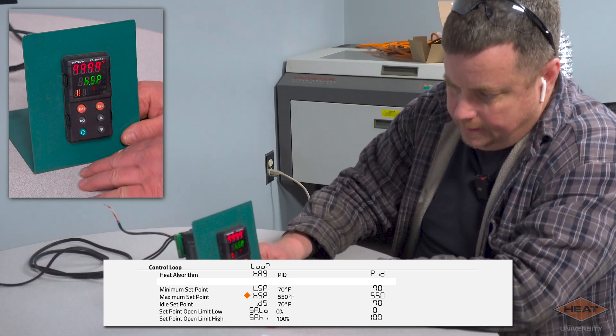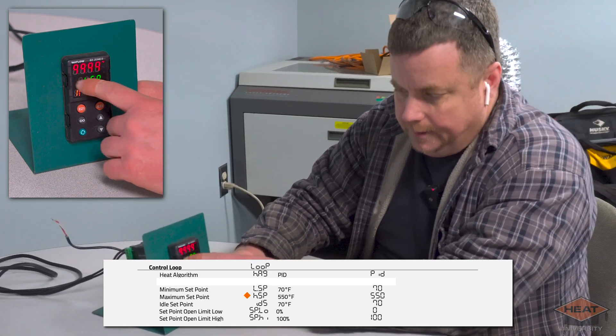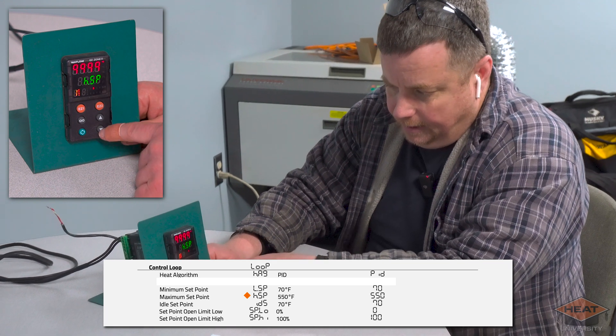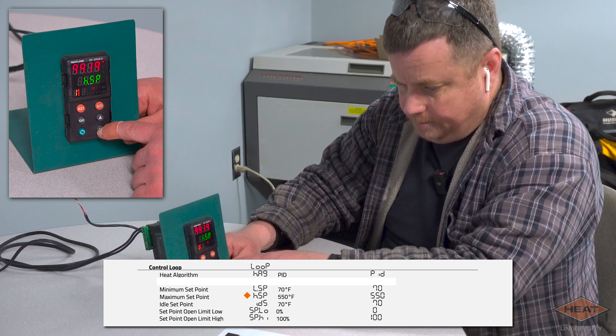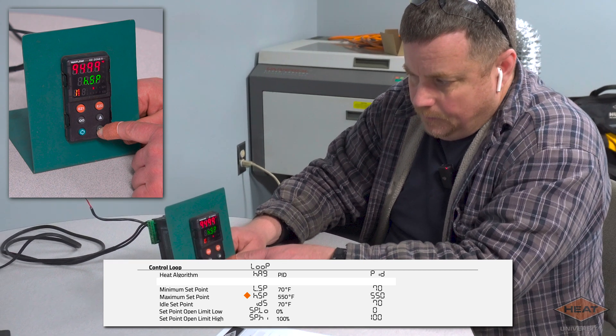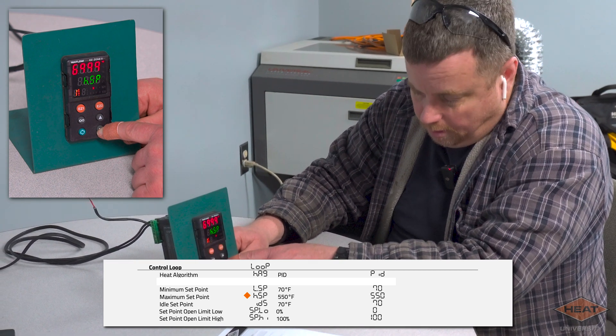Then we're going to cycle again, and then that's our high set point. You can see from the factory it's 999, and typically our high set point is 550 for an oil system, perhaps 250 for like a water glycol.